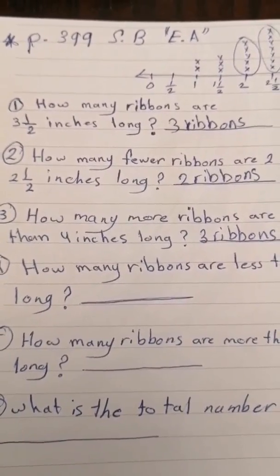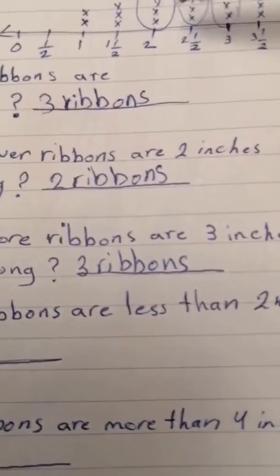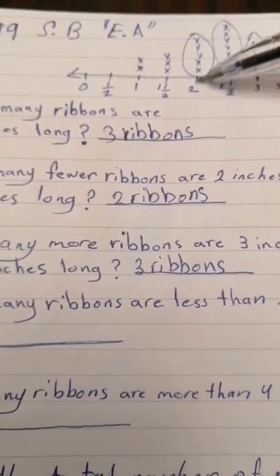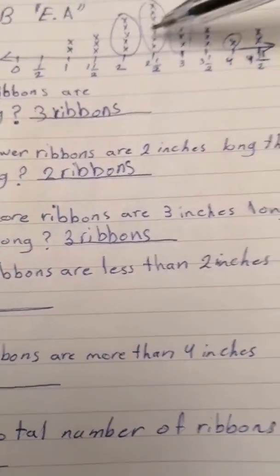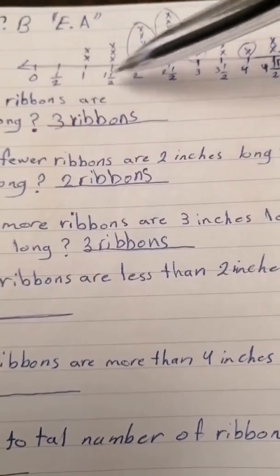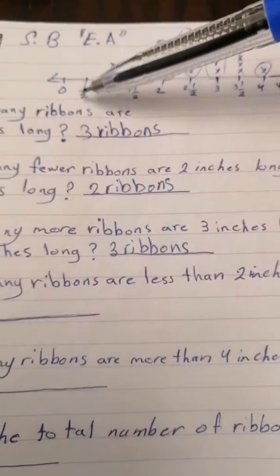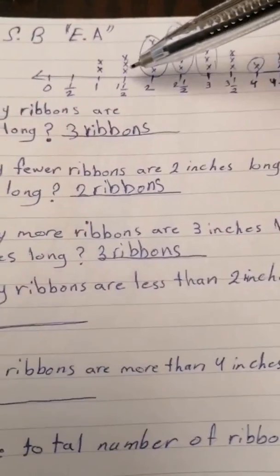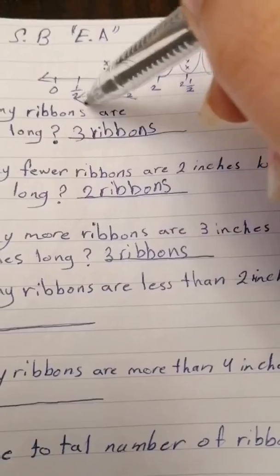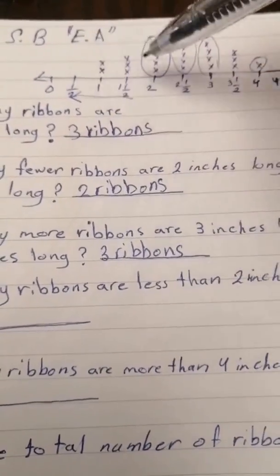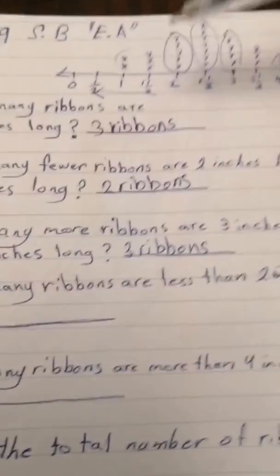Question four: how many repons are less than two inches long? Go to two inches and look at all lengths less than two inches — that means one inch, one and a half inches, and so on below two. Count all the X's on that side: one, two, three, four, five. So the answer is five weapons less than two inches long.